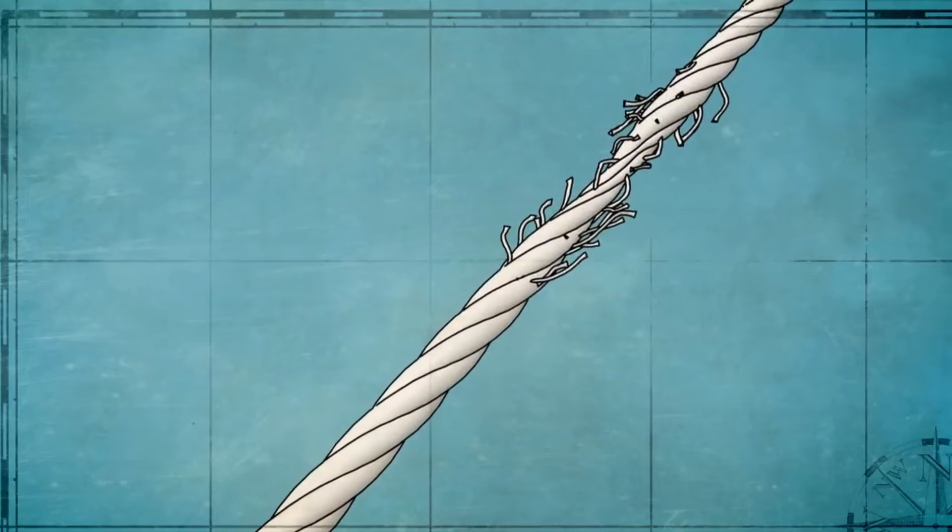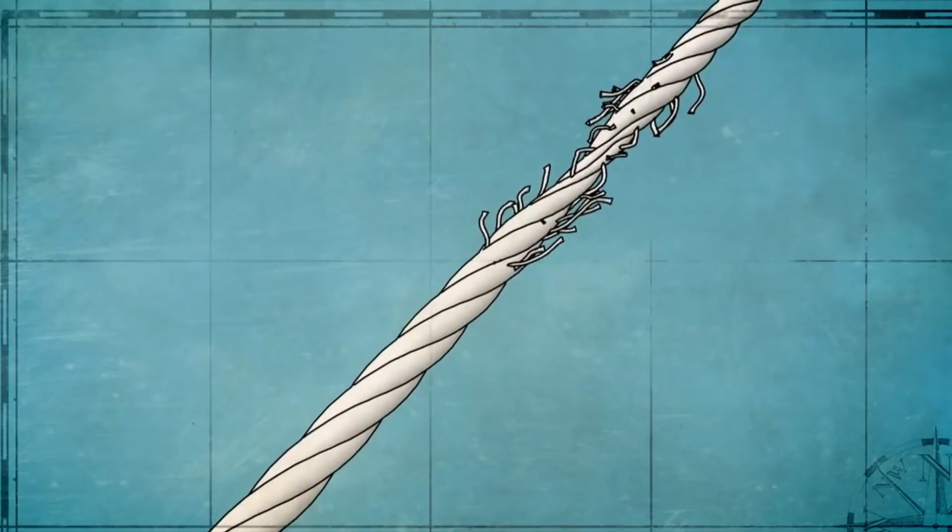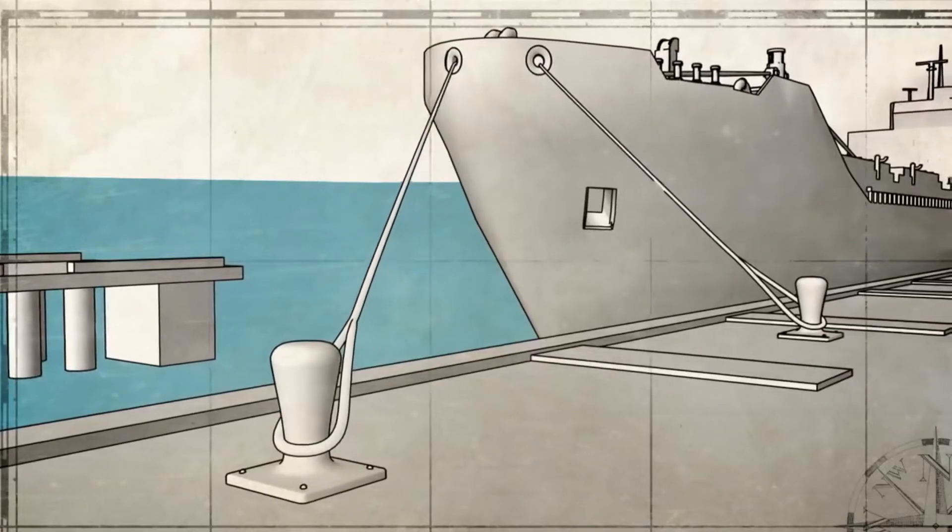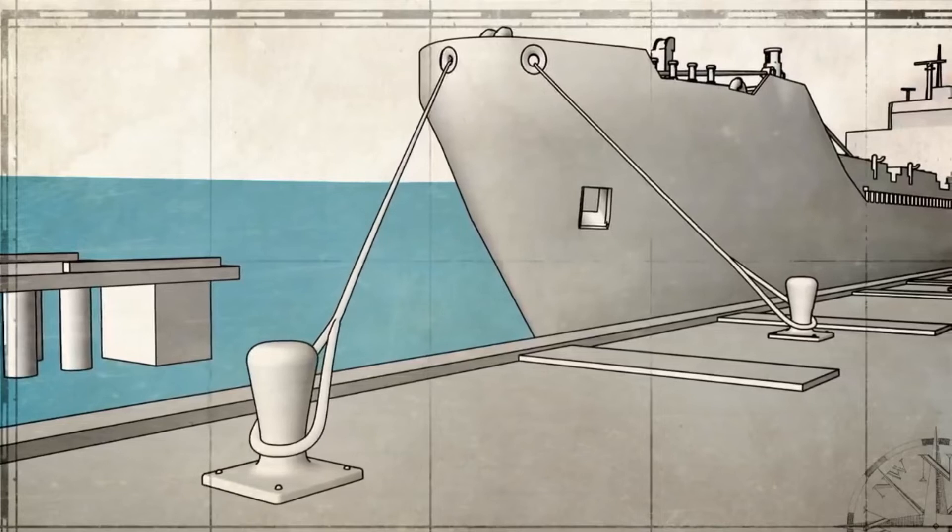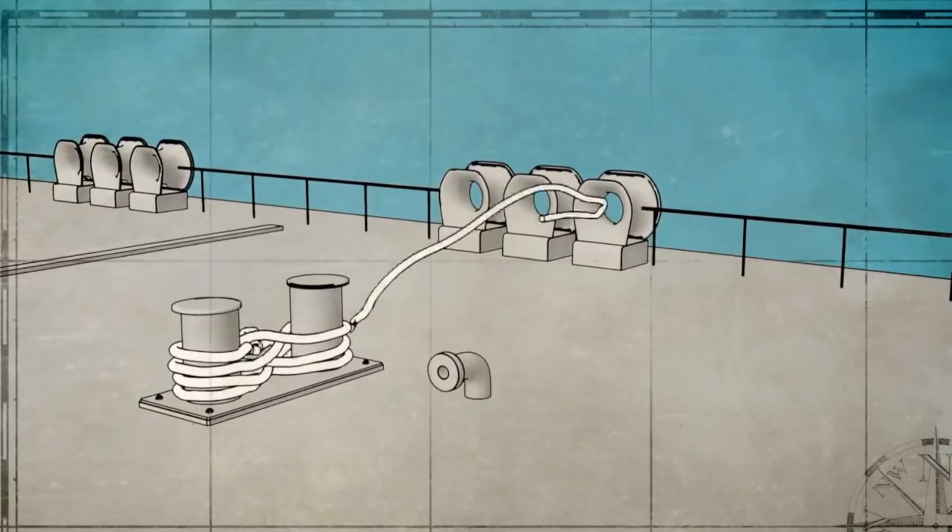Snapback is potentially the most deadly of all line handling hazards. A worn line, the wrong line, or a line under too much tension can part, snapback, and recoil, striking anything in its path with tremendous force.